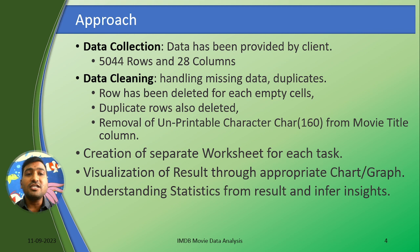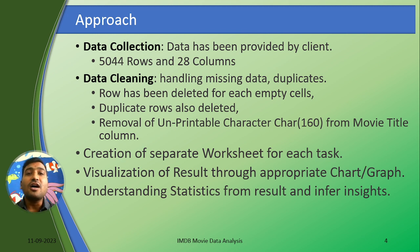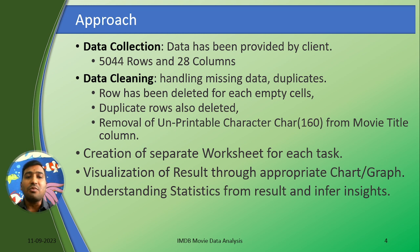The approach taken was: first, I collected the data provided by the client. In the data there are around 5,000 rows and 28 columns. I performed data cleaning to handle missing data and duplicate data, which was detected and removed, and rows were deleted for each empty cell. Removal of unprintable characters in the movie title column was also performed, and a separate sheet was created for each task.